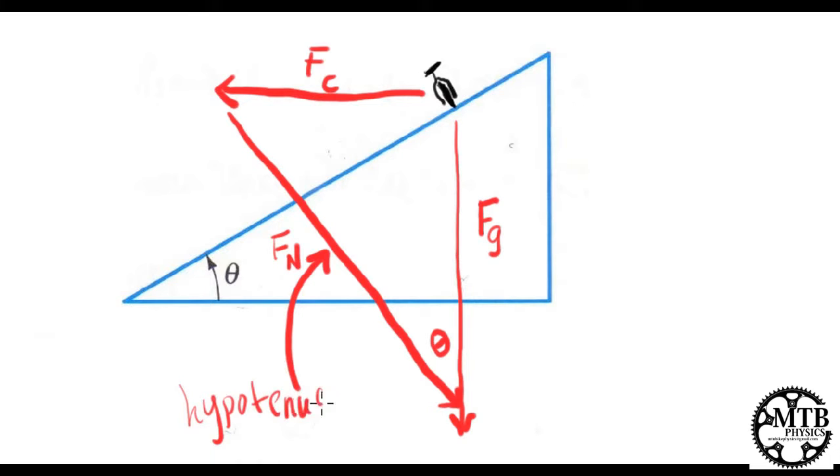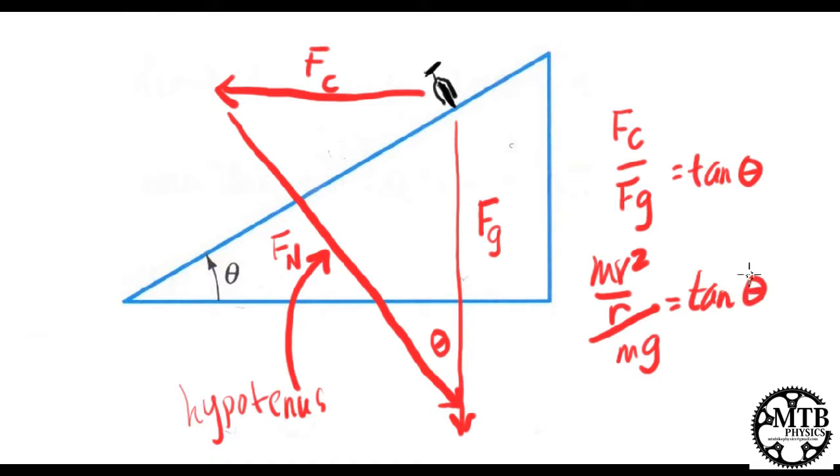Centripetal force divided by force due to gravity is equal to the tangent of the angle. We know that our centripetal force is mass times velocity squared over r, and we can substitute in mg for our force due to gravity. The tangent of our angle will equal velocity squared over rg.